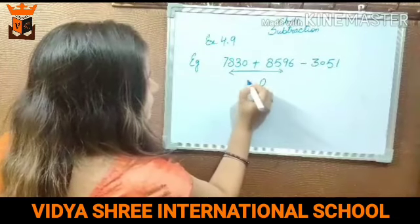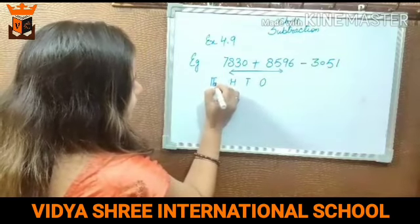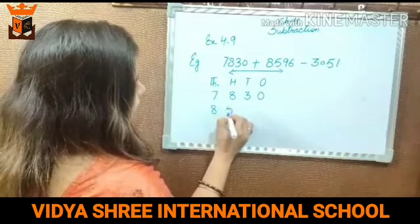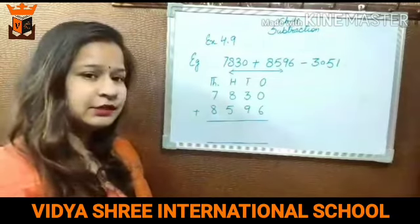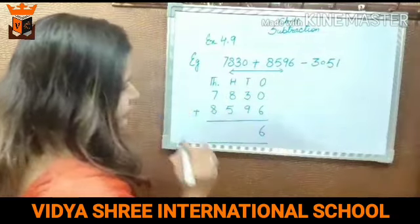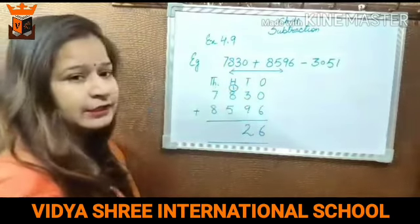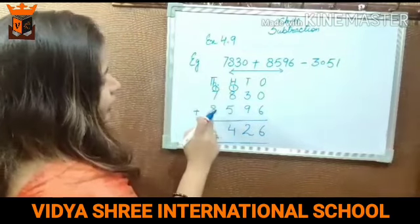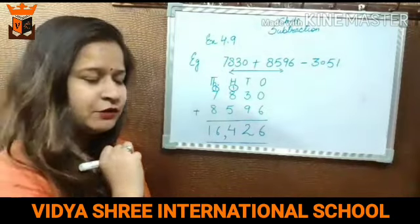Let us start this question. Firstly, write the place value. Here are four digits, so we will write four place values: ones, tens, hundreds, and thousands. 7830 plus 8596. Addition kaise karte hai — sabse pahle ones digit ko add karte hai. Ones place pe 0 aur 6 hai. 0 plus 6 is 6. 3 plus 9 is 12 — write 2, carry 1. 8 plus 8 is 16, plus 1 carry is 17 — wait, 8 plus 5 is 13, plus 1 is 14 — write 4, carry 1. Then 8 plus 7 is 15, plus 1 is 16. So the answer is 16,426.